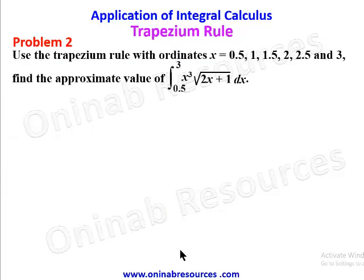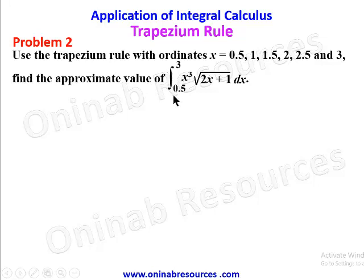Problem two: use the trapezium rule with ordinates x = 0.5, 1, 1.5, 2, 2.5, and 3 to find the approximate value of the integral of x·∛(2x+1) dx from 0.5 to 3.